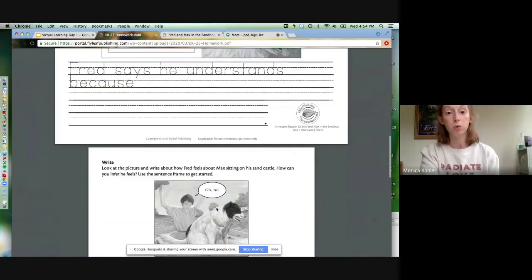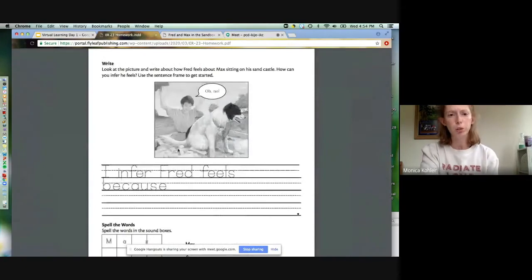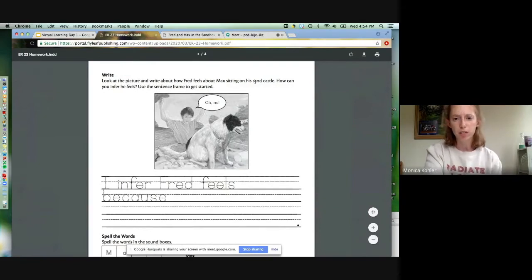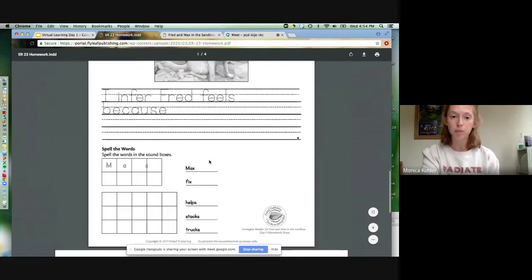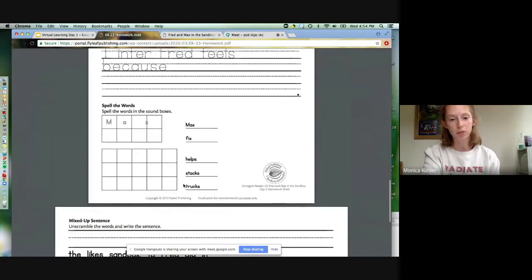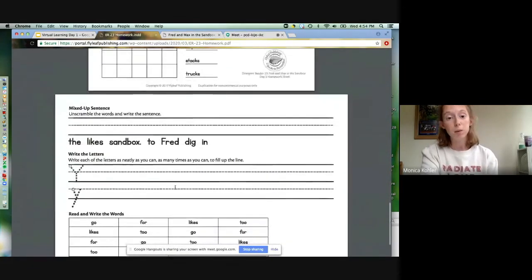Alright. The next writing activity Miss Kohler is going to do with you all. I'm just going to show you how to do it, talk about it real quick right here. It says write. Look at the picture and write about how Fred feels about Max sitting on his sandcastle. How can you infer he feels? Use the sentence frame to get started. Right down here we have some sound boxes and we're going to practice a couple of those together and then we'll be just about finished up.